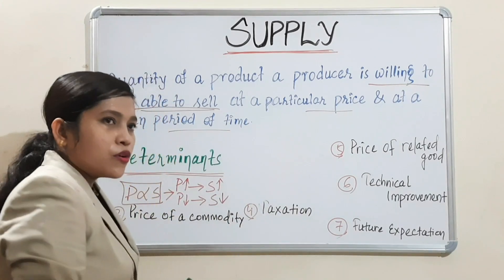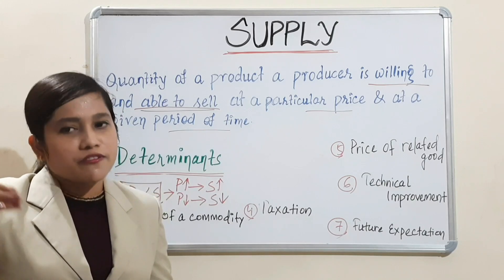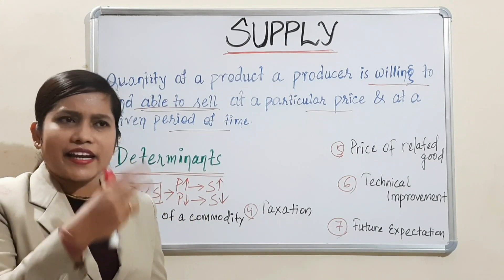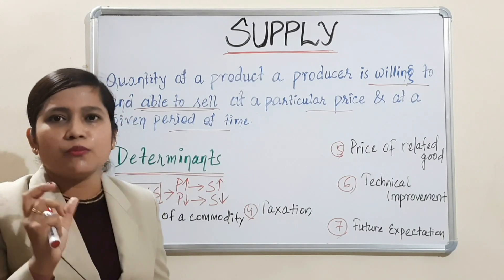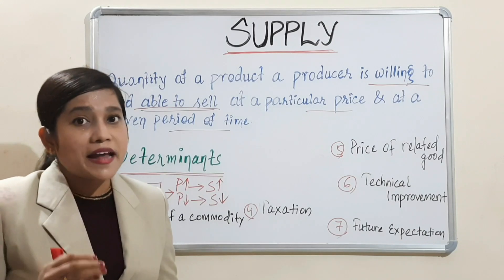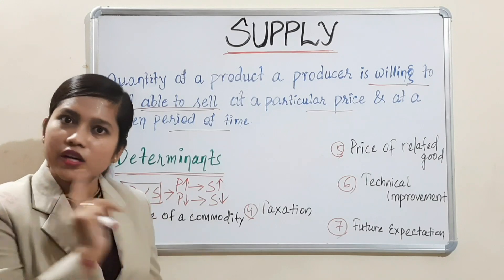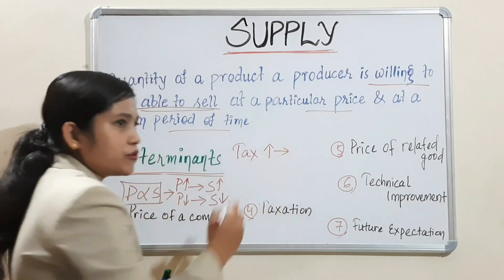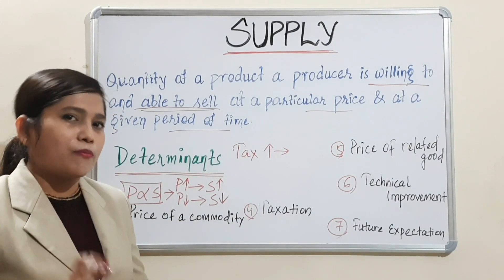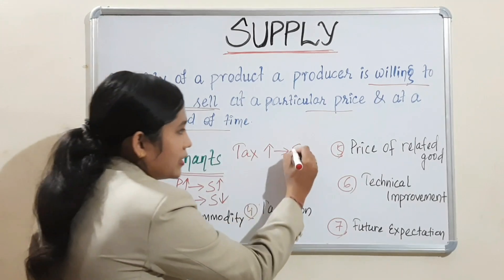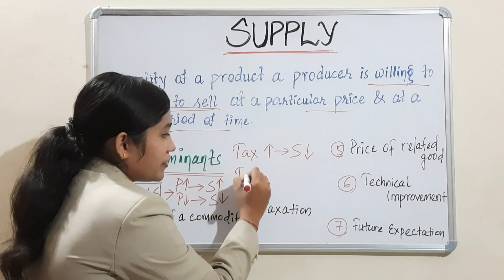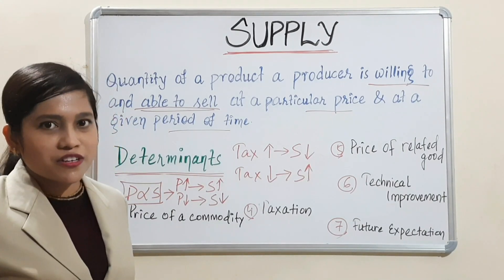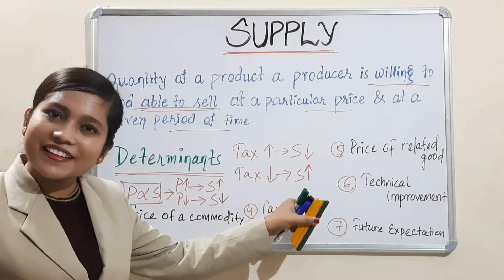Next is taxation. Whatever income we are getting, a certain portion of that income we have to give to the government in the form of tax. When tax will increase, we have to give more money to the government, so we are not willing to supply that particular commodity — supply will decline. Similarly, when tax will decrease, supply will increase, because for the same commodity, if you have to give less amount of tax, it will be beneficial and we can get more profit.